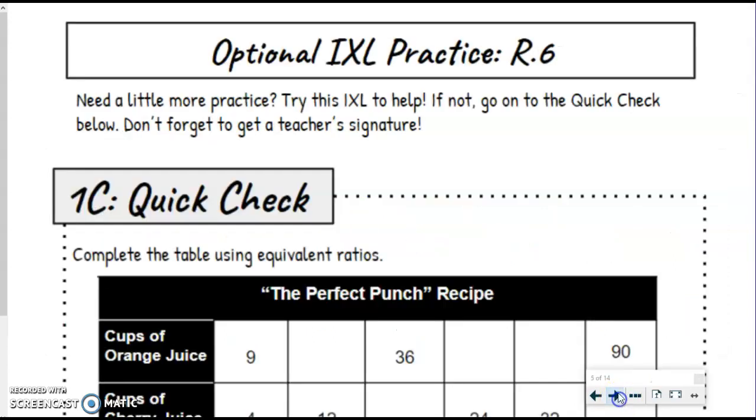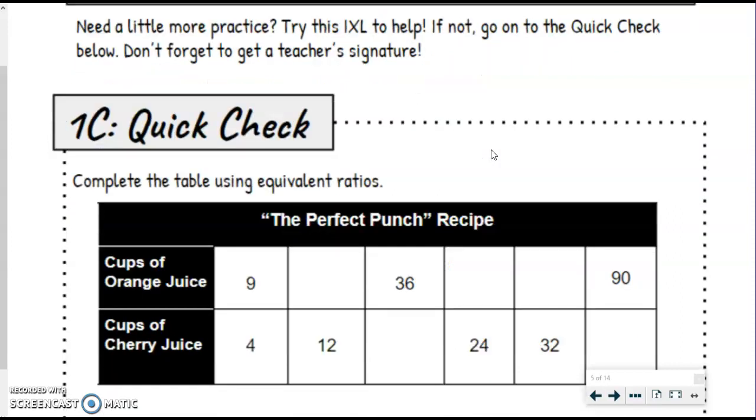So you have an optional IXL this time. I know you've done two IXLs already that you had to do. This is an optional one if you would like a little more help with ratio tables before you go on to your quick check.